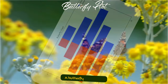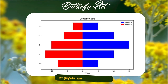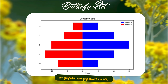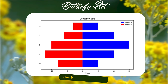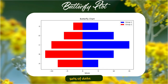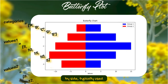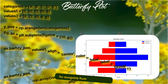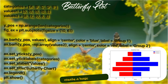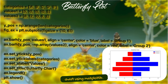A butterfly chart, also known as a tornado or population pyramid chart, is a type of chart that displays two sets of data side by side, typically used to compare two populations. Here is how you can create a basic butterfly chart using Matplotlib.